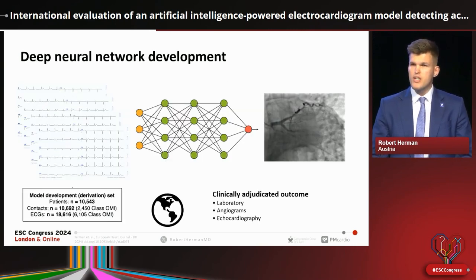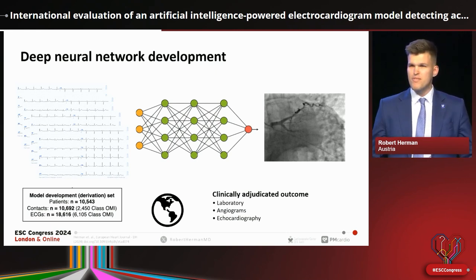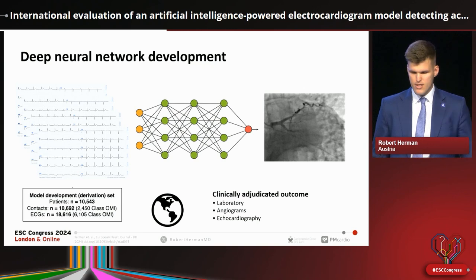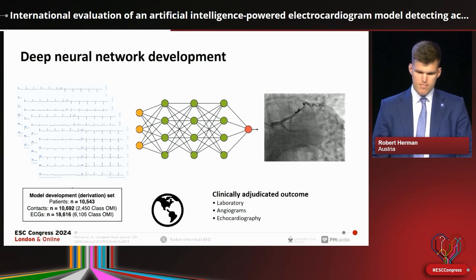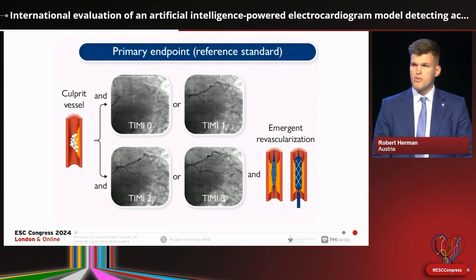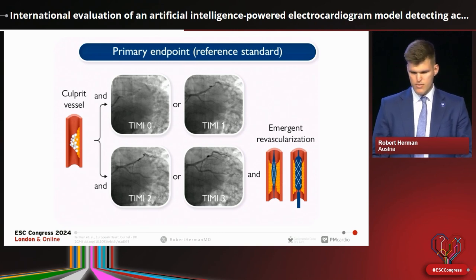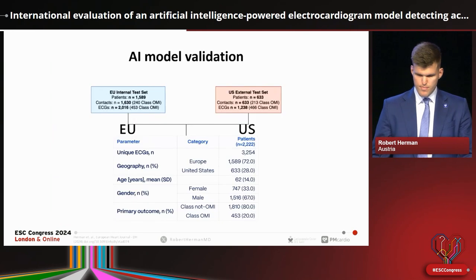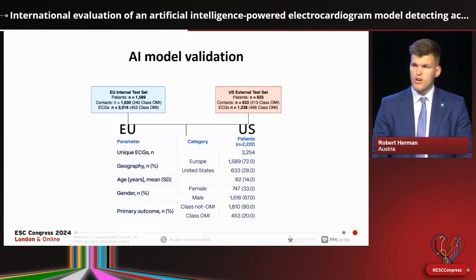We've developed this model on over 18,000 ECGs from over 10,000 patients. The beauty of deep learning is that the model is not explicitly coded with features like standard ECG interpretation — deep neural networks are able to find deeper connections in the data, using many more parameters that might not be humanly explainable, to correlate patients with coronary occlusion. We validated this model in an international cohort, with a primary angiographic endpoint of patients needing emergent revascularization or TIMI 0 to 1 flow.